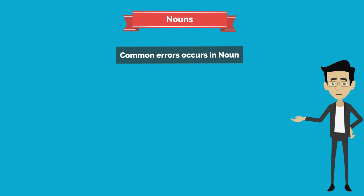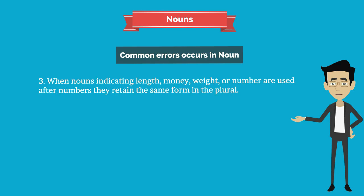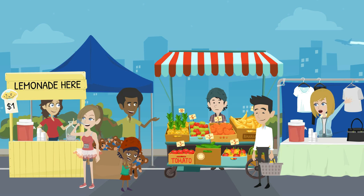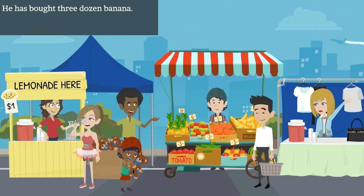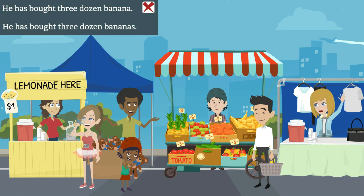Third common error: when nouns indicating length, money, weight, or number are used after numerals, they retain the same form in the plural. Incorrect: 'He has bought three dozens bananas.' Correct: 'He has bought three dozen bananas.'